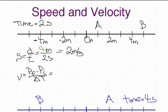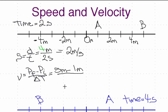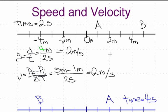4 meters divided by 2 seconds gives us 2 meters per second — that's the speed. Now for velocity: my final position is 5 meters, my initial position is 1 meter. I divide by the time, 2 seconds, and that's still 2 meters per second. But I was going in the positive direction, so my velocity is positive 2 meters per second, and my speed is just 2 meters per second.